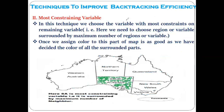The second technique is the Most Constraining Variable. These terms are slightly confusing, so focus carefully. The previous technique — Least Constraining Value — was related to value selection. This technique is related to variable selection: which variable to select so that the number of backtracks can be reduced. In this technique, we choose the variable with the most constraints on the remaining variables — the one mostly affecting the remaining variables.